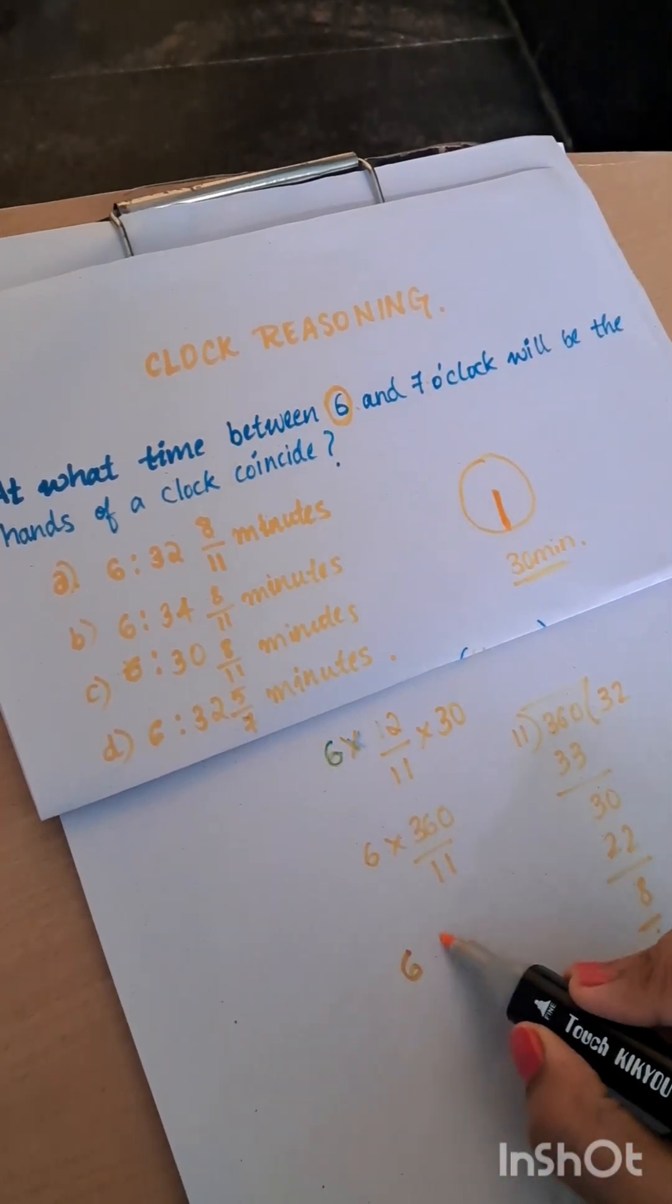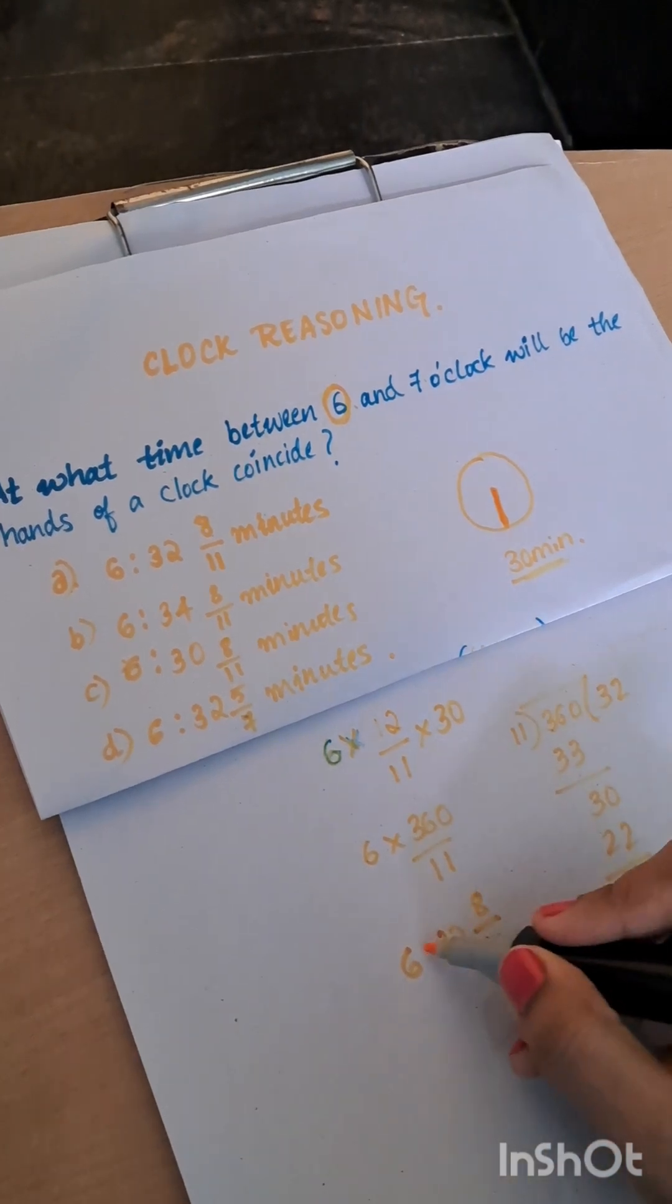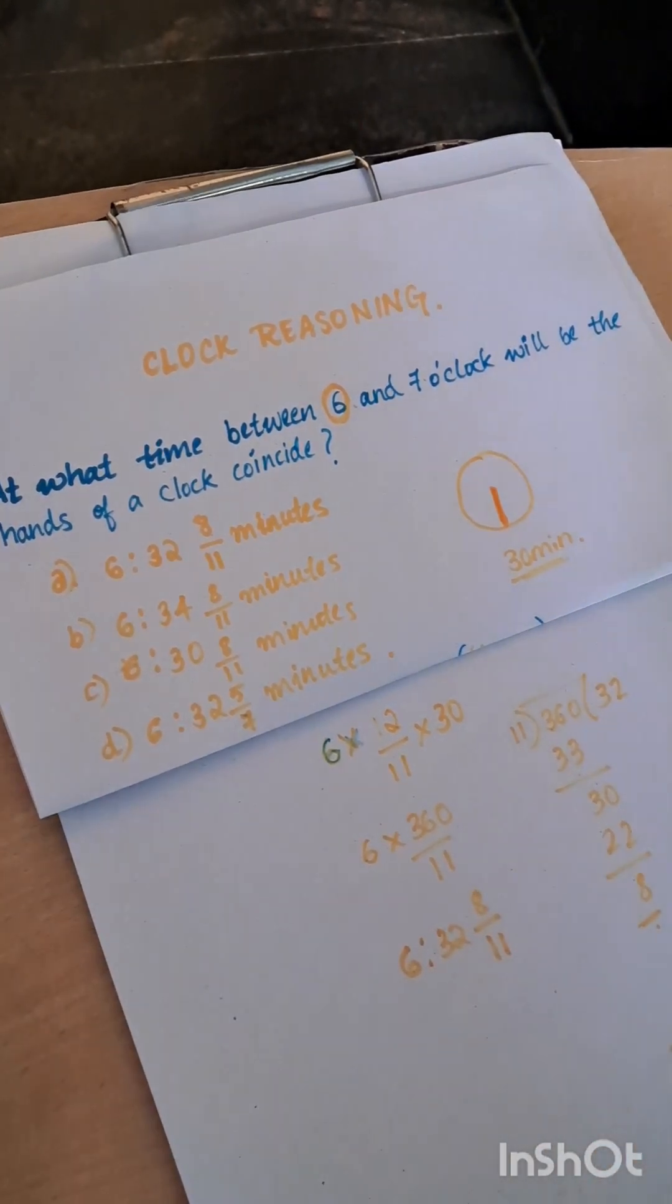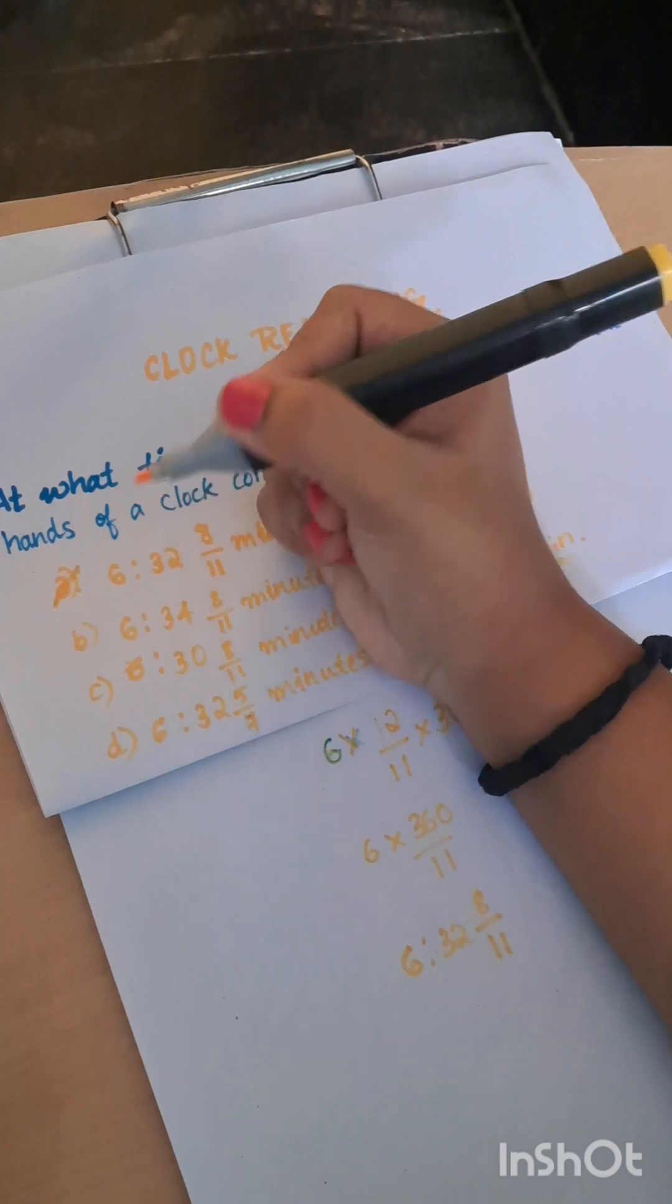The mixed fraction will be 6:32 and 8 by 11. So 6 hours, 32 and 8 by 11 minutes. So the answer is option A. This is using the formula.